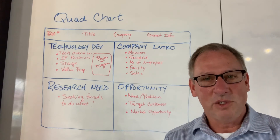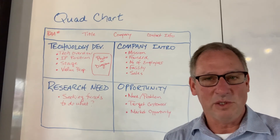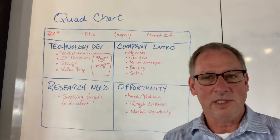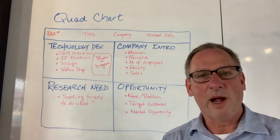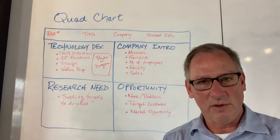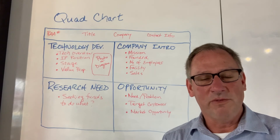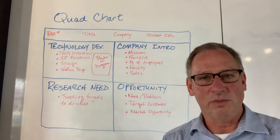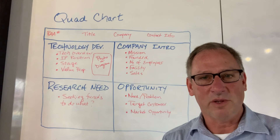On the bottom left, you talk about the research need — what is it you need the funding to do? Moving to the bottom right is your chance to talk about the opportunity: what problem needs to be solved, who needs it solved, and who do you envision will be purchasing the product? What's the target market once the technology gets to market, and what are some overall trends for the market?